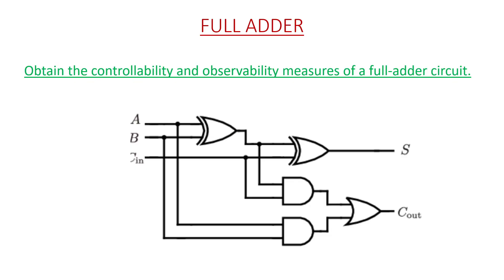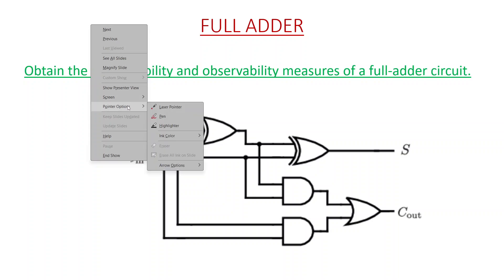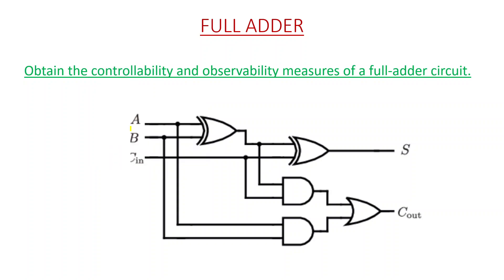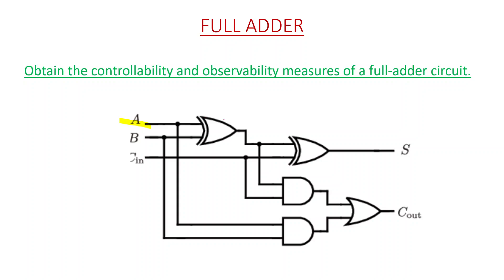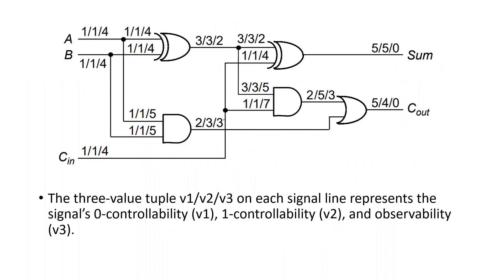Hello and welcome to this video on VLSI testing. We are discussing a numerical on VLSI testing. In this we are given a full adder circuit. This full adder circuit has three inputs A, B and C-in, and there are two outputs: sum and C-out. We have to obtain the controllability and observability measures of this full adder circuit. These controllability and observability together are called testability measures.